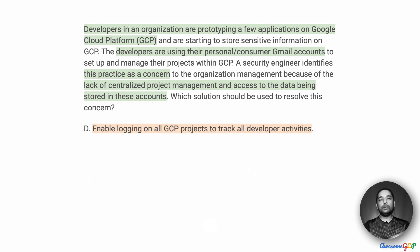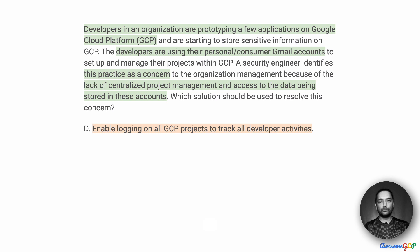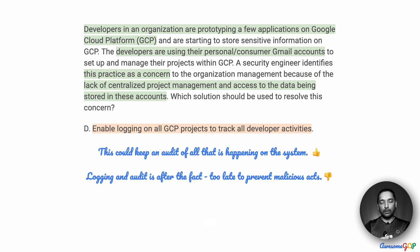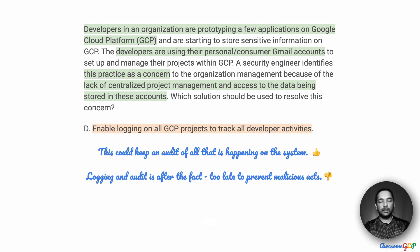Option D suggests enabling logging on all GCP projects to track developer activities. This is fairly good — having an audit history and trace of what's happening across projects is useful. However, logging and audit is an after-the-fact event. If there has been an attack and data has been exfiltrated, the audit will reveal it, but there's no way to control it — it's too late. So just having logging and audit is not a preventive mechanism. It does not control access before the act. Therefore, option D is not useful for us either.